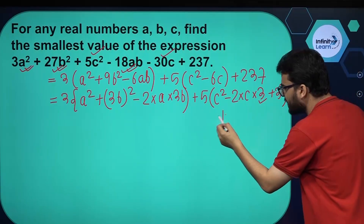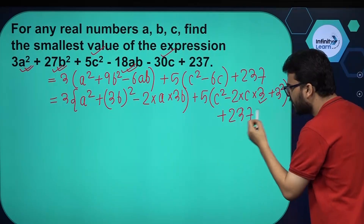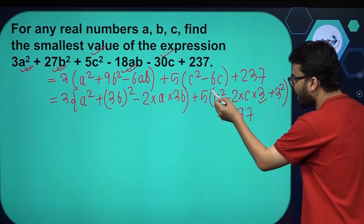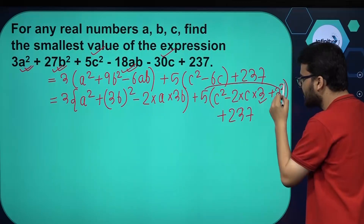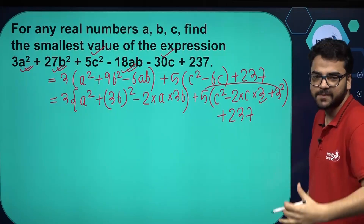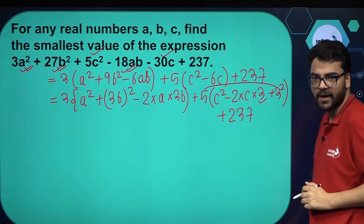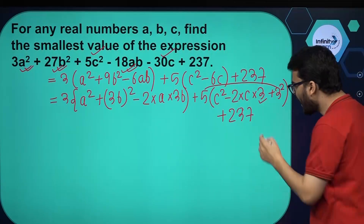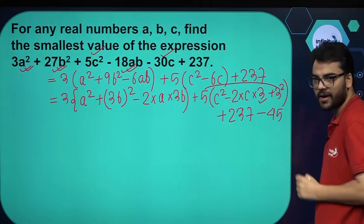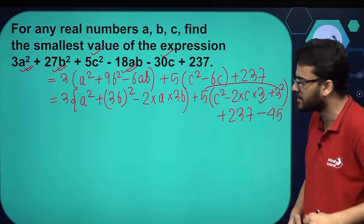We also have plus 237. Since we are adding 5 times 9, which is 45, to complete the square, we must also subtract 45, so there is no violation of any mathematical law.